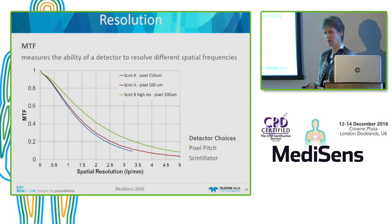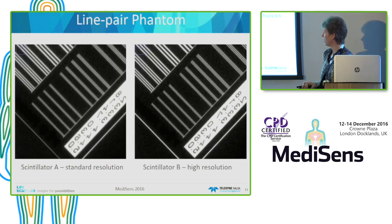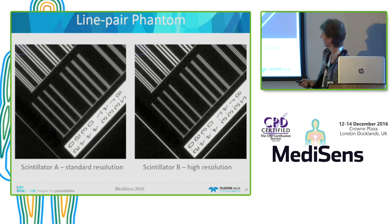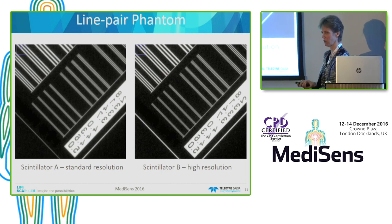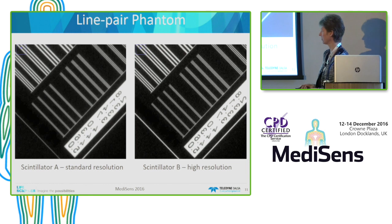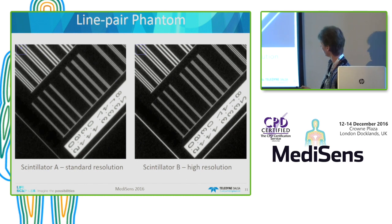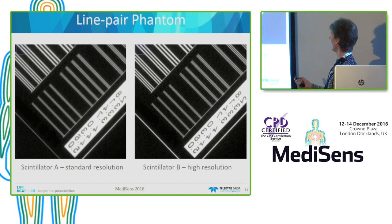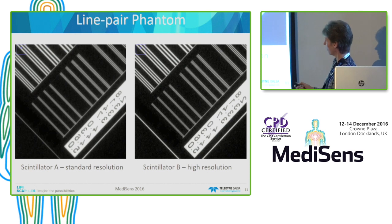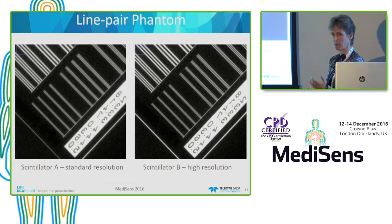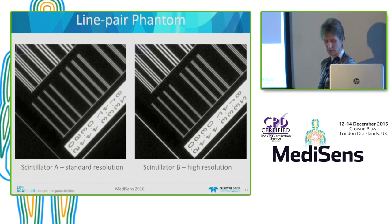So when designing a detector, you have to choose the pixel size and the scintillator material. To show the effect of MTF performance on a resolution image, this is a line pair phantom image for the high resolution detector and the standard detector under identical dose conditions. You can clearly see that the high resolution detector images the lines much more sharply — 5 line pairs per millimeter is visible — while the standard resolution detector doesn't have sharp transitions on the lines, and 5 line pairs per millimeter is no longer visible.